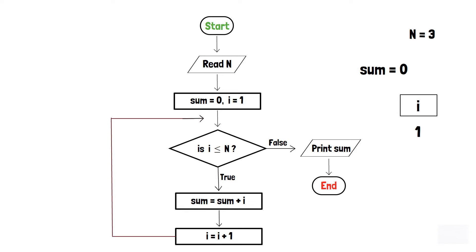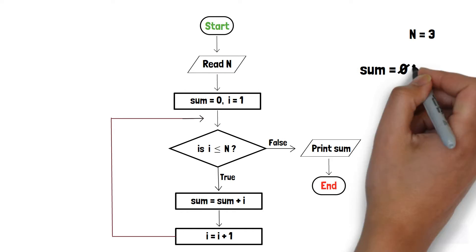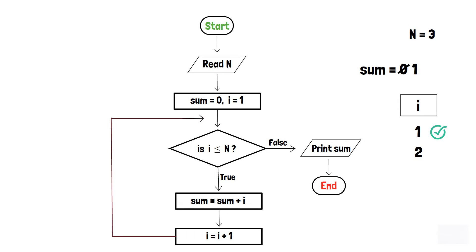Since i is equal to 1, the condition inside the decision box is true. Thus, the sum becomes 0 plus 1 which is 1, and i becomes 2 after incrementation.